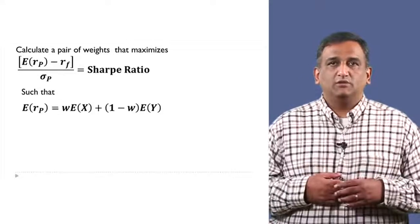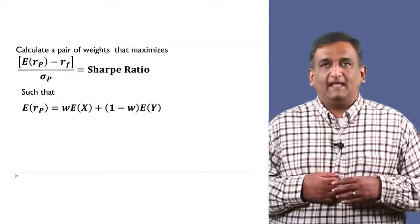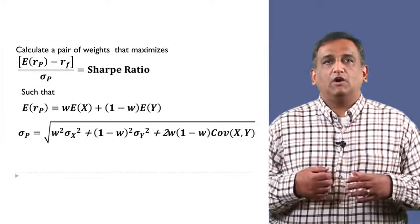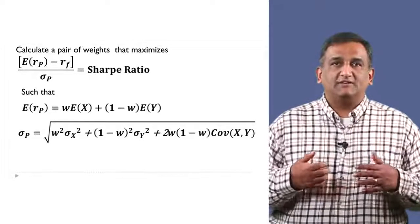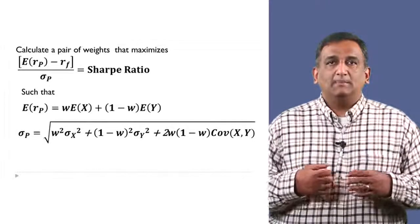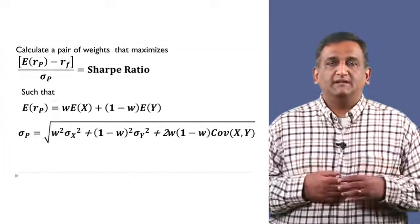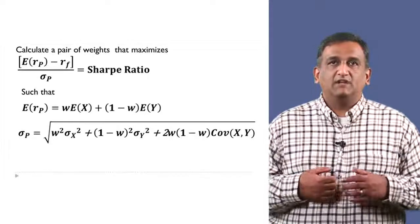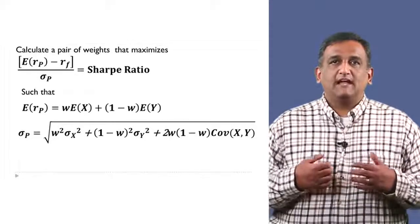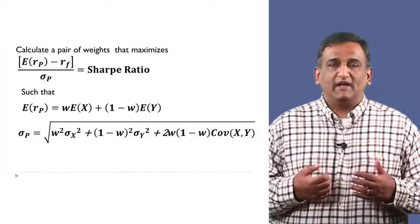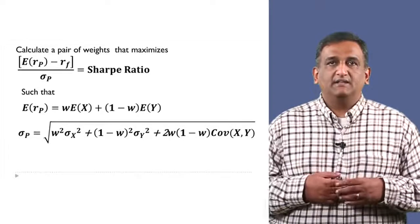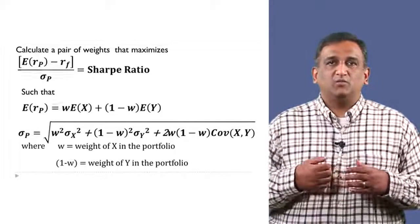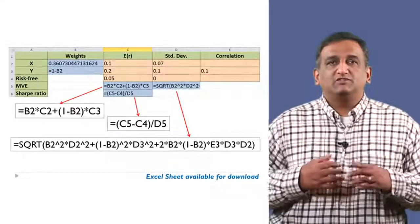The standard deviation of the portfolio's return is the square root of: W squared times the variance of X's returns, plus (1 minus W) squared times the variance of Y's returns, plus 2 times W times (1 minus W) times the covariance between X and Y's returns. Here W is the weight of X in the portfolio and 1 minus W is the weight of Y in the portfolio.